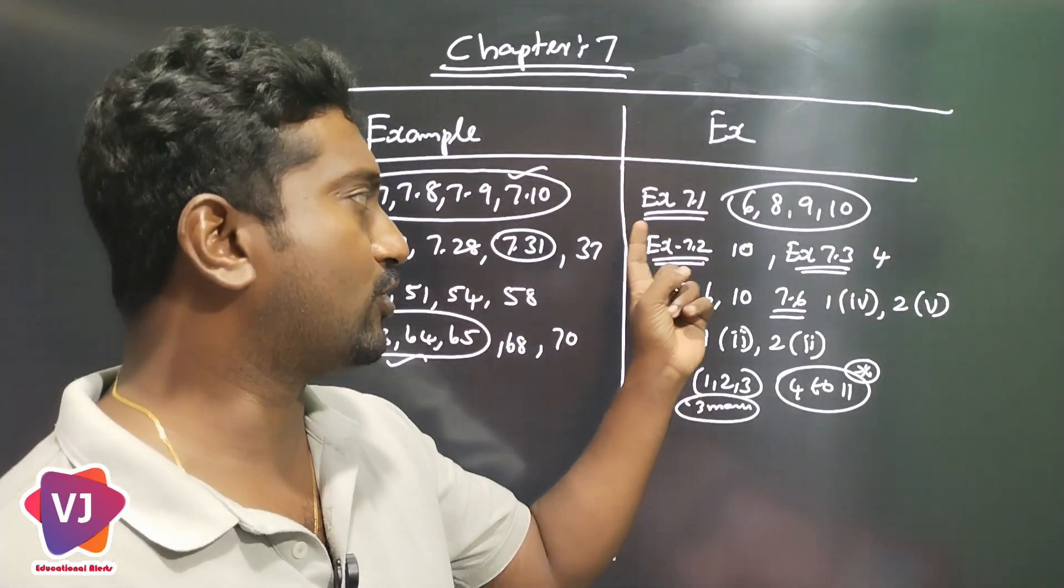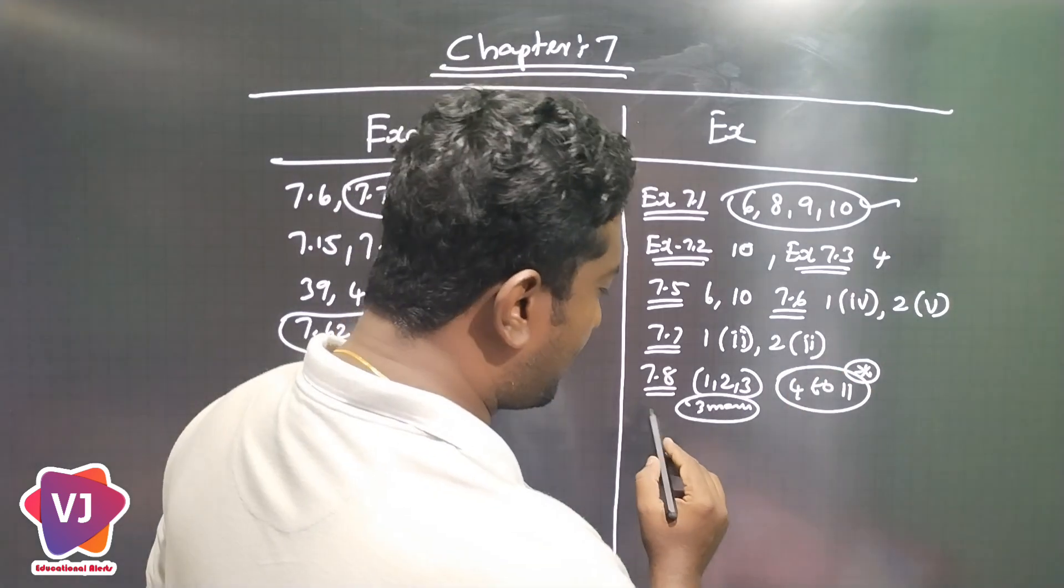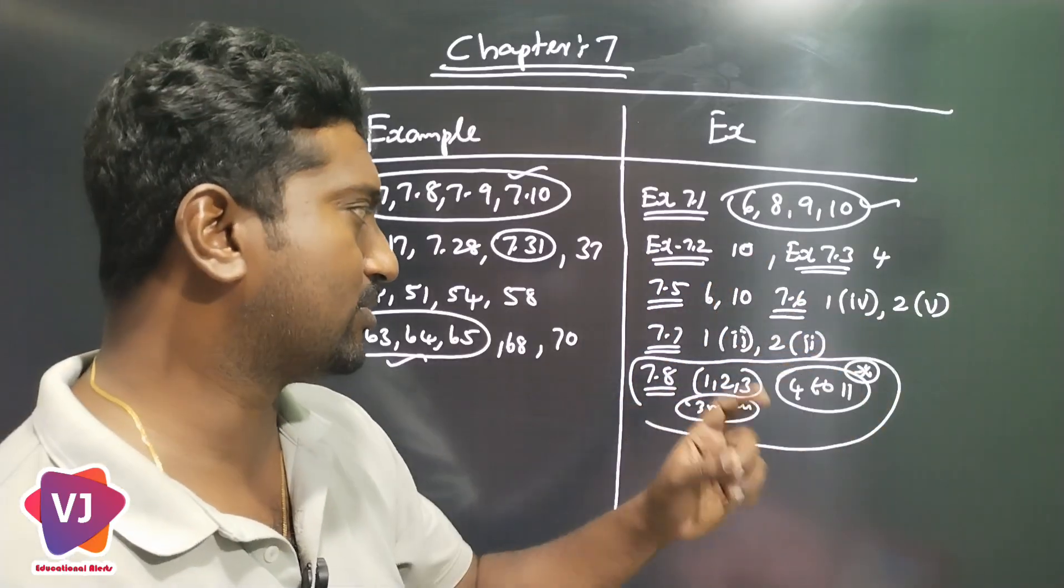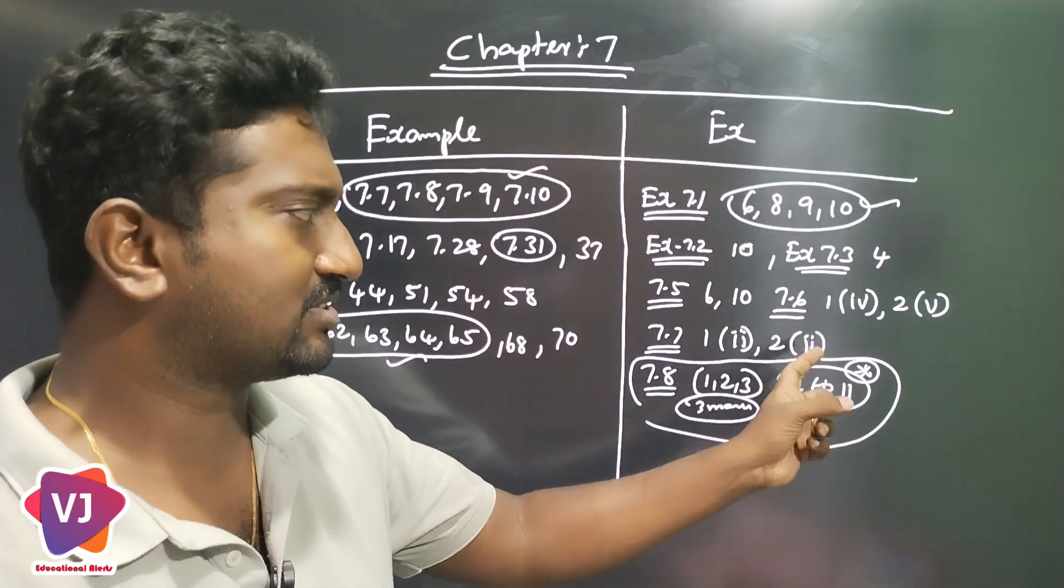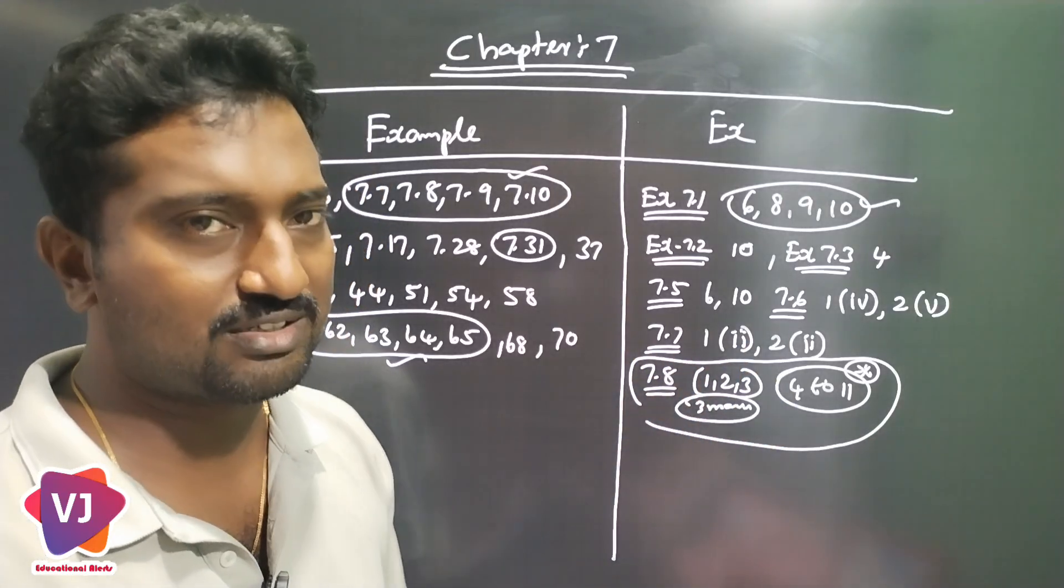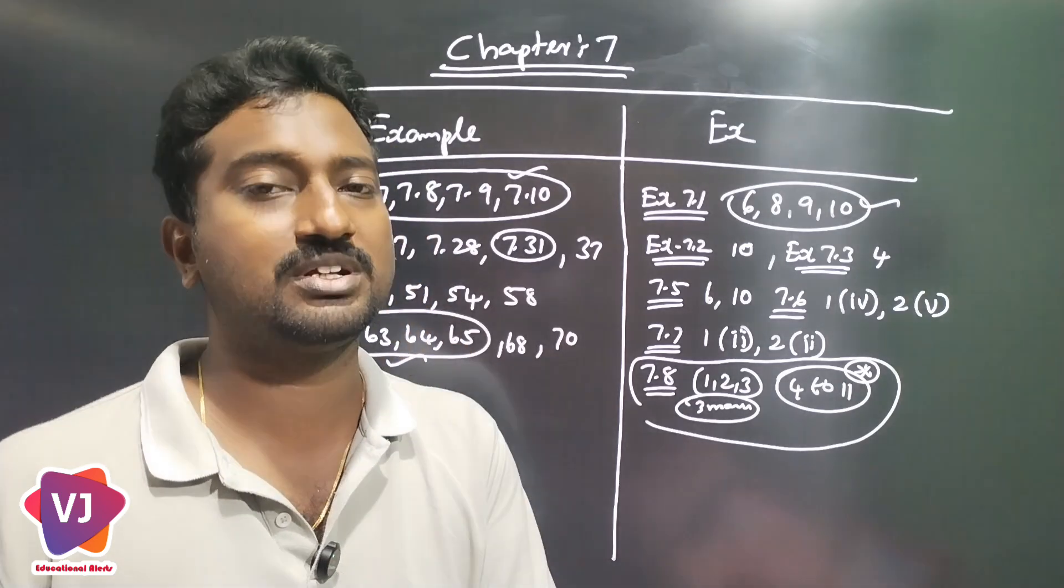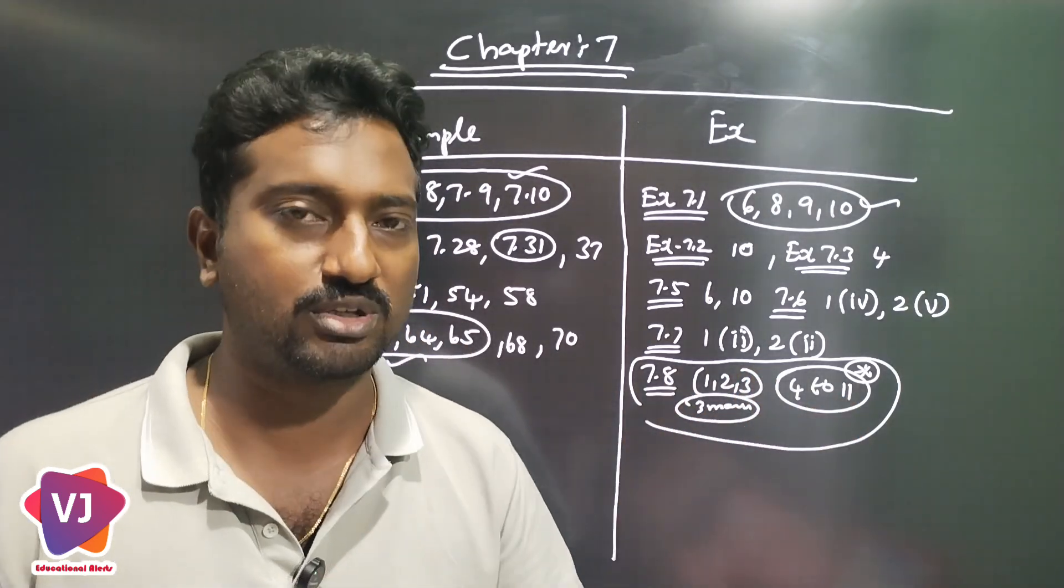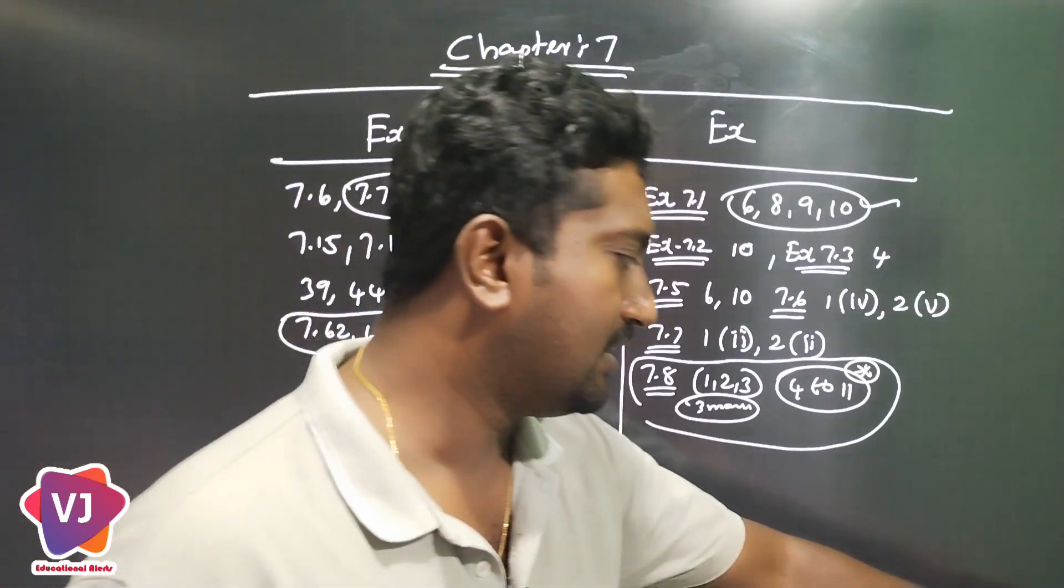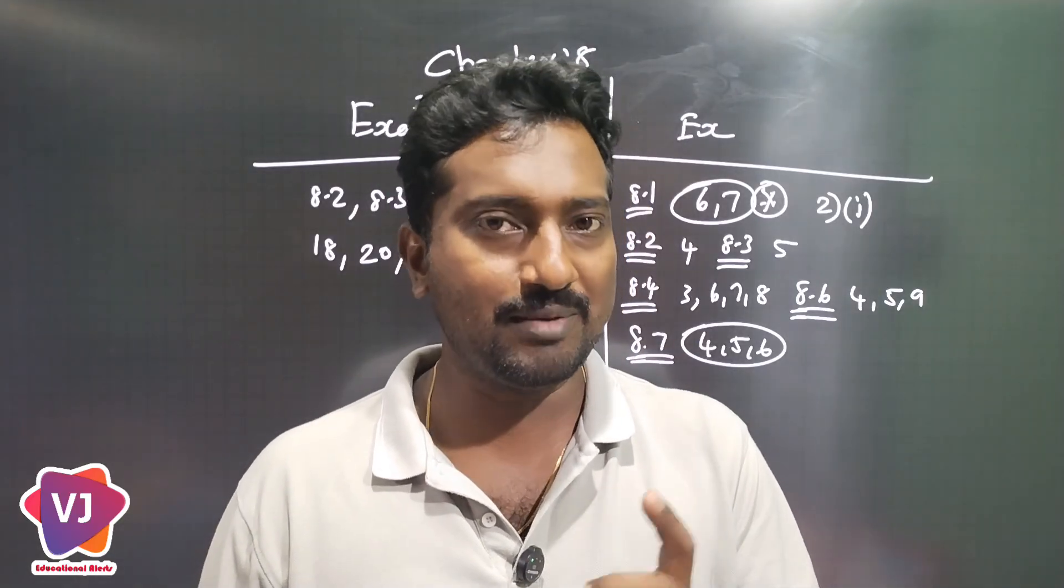Let's apply for example. In the exercises, 6, 8, 9, 10. We'll explain this path. We will ask questions. Exercise 7.2 is 10th, Exercise 7.3 is 4th, Exercise 7.5 is 6th, Exercise 7.6 is 1st sum and 2nd sum is 5th. Exercise 7.7 is 1st sum and 2nd sum. Exercise 7.8 is 1st sum and 3rd sum is 3 marks.